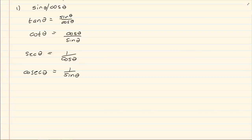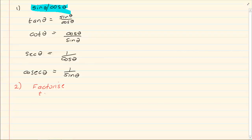So what we notice is that every ratio can be changed to sin or cos, and sometimes a combination of sin and cos. The second thing we need to remember is that once we have changed everything to sin and cos, we are going to factorize.